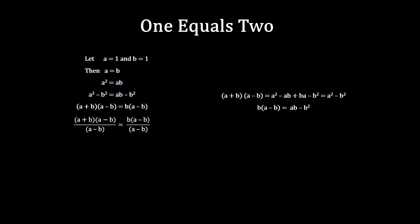We can divide both sides by a minus b and cancel out common terms in the fractions. So the equation simplifies to a plus b equals b. Substituting in the ones for a and b, we get 1 plus 1, or 2, equals 1.